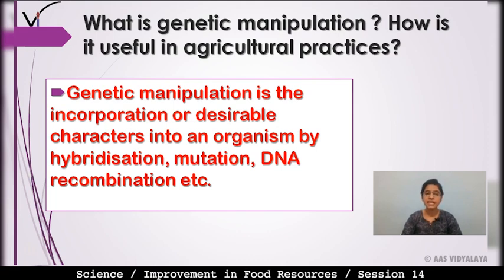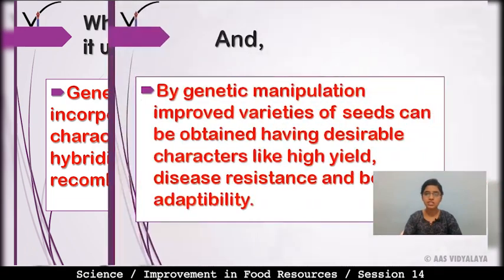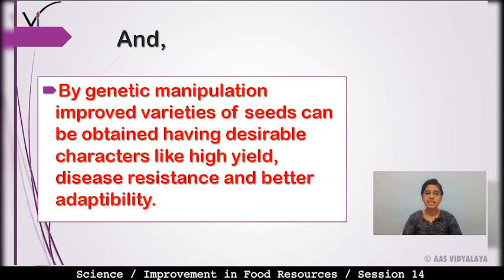Genetic manipulation mein, yeh incorporation of desirable characters hota hai organism mein jo hybridization, mutation, DNA recombination etcetera ki wajah se hota hai. And by genetic manipulation, improved varieties of seeds can be obtained having desirable characters like high yield, disease resistance, and better adaptability.